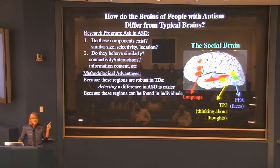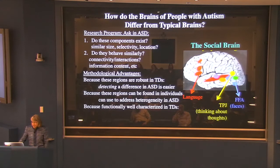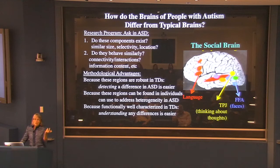Second, each of these regions can be found in pretty much every typical individual, which means we could detect heterogeneity in a group of people with autism — heterogeneity being one of the key methodological challenges in studying autism, since autism is not one thing but a big spread of different things. Third, because these regions are well functionally characterized in typical subjects, we have a leg up in understanding what differences in these regions might mean.